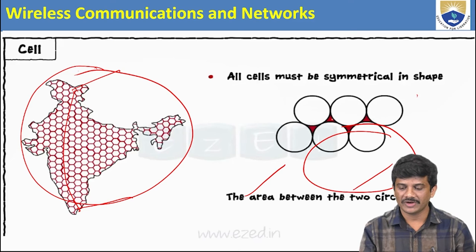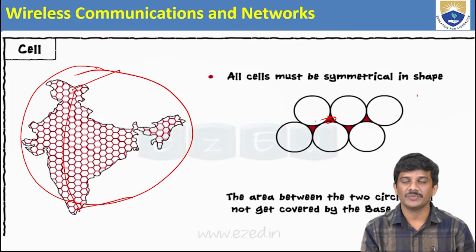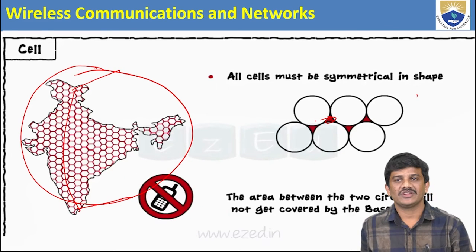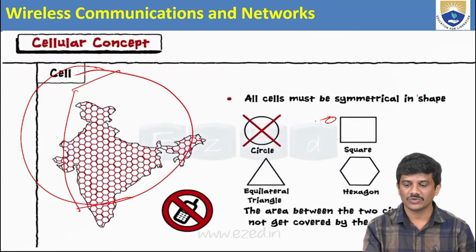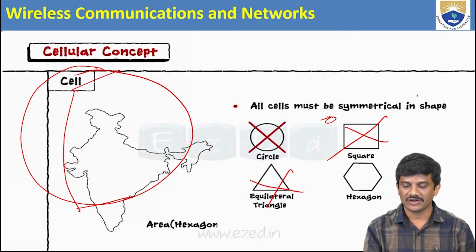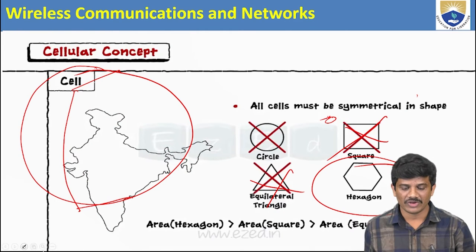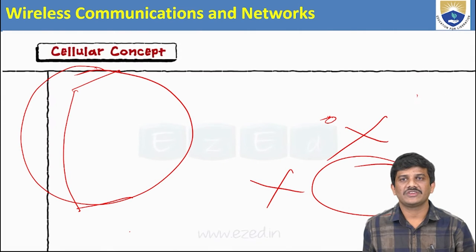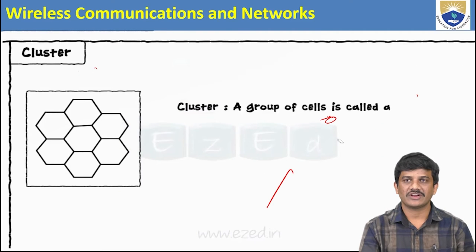If you use a circular shape, there is overlapping in the area between two cells and the base station coverage. That's why we eliminated the circular, square, and equilateral triangular shapes, and we use only the hexagonal shape. We can also see how the connection in cluster size is established. The cluster is a group of cells, and its size is not fixed.